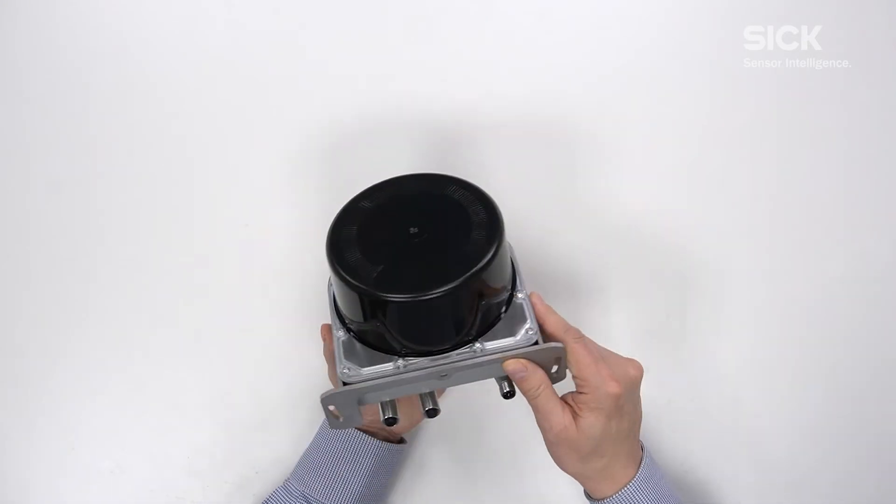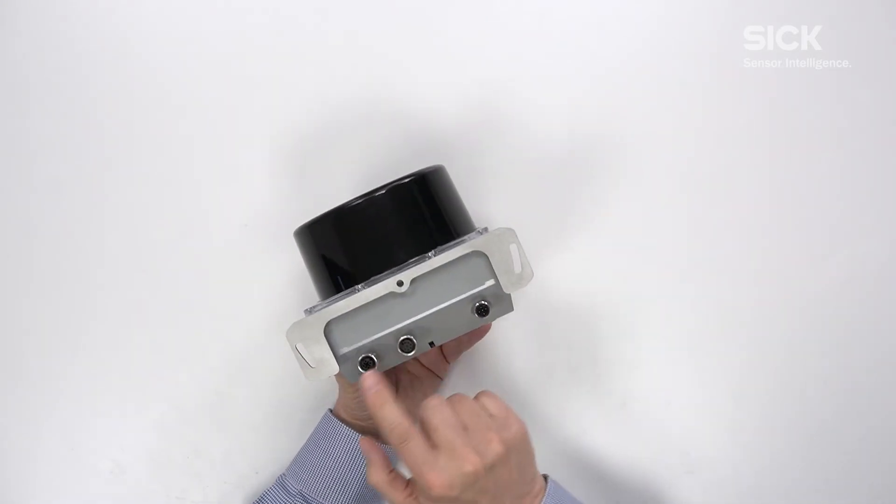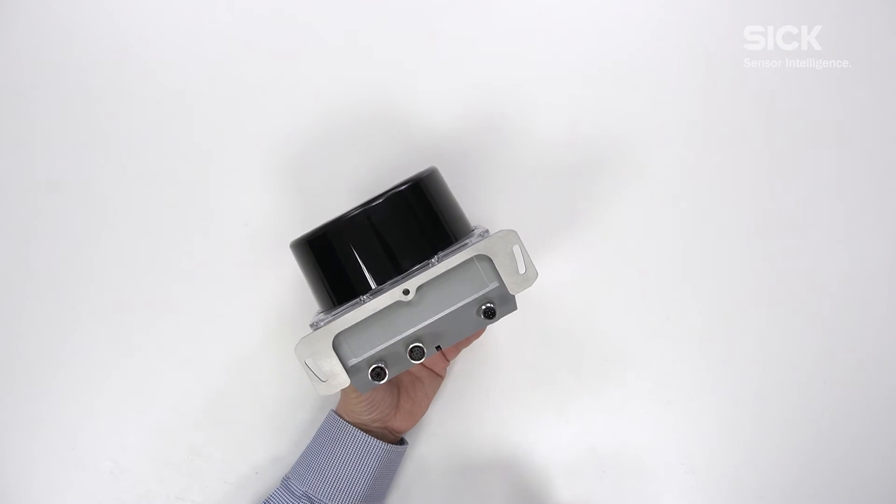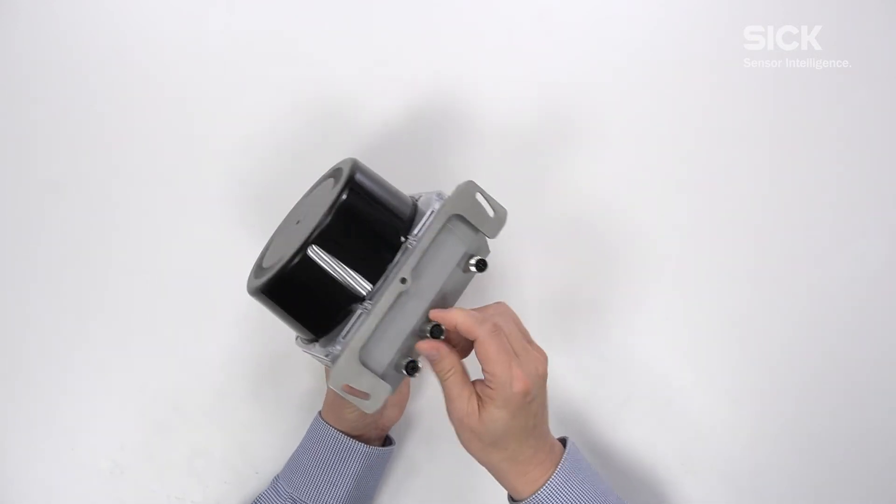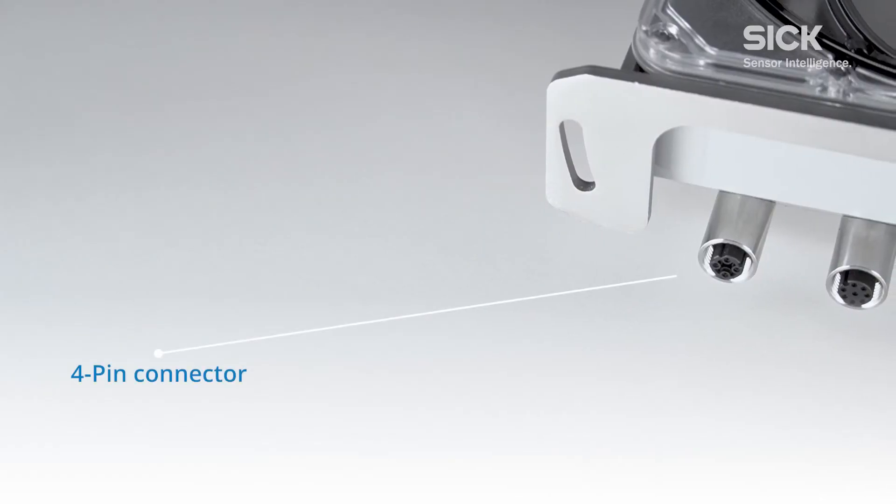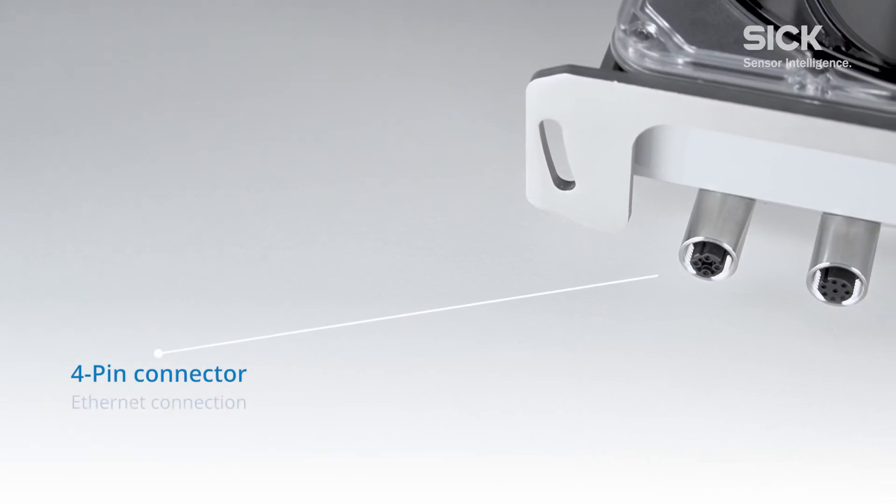There are three connectors on the back of the device. The connectors are L12 type and flexible. That means that the angle can be changed by turning the connectors to the right or the left side. The 4 pin connector on the left is for the Ethernet connection.